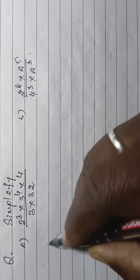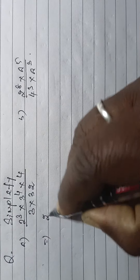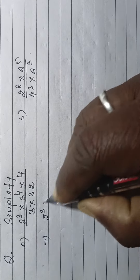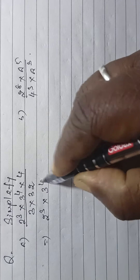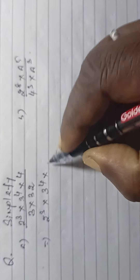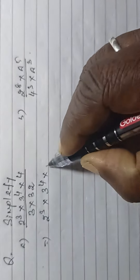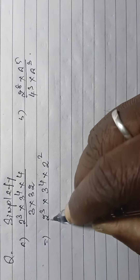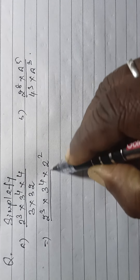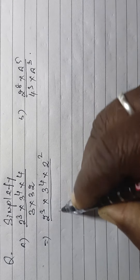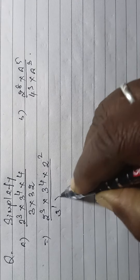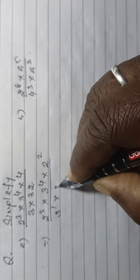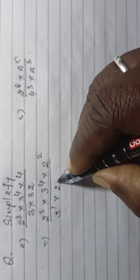Now this is 2 to the power 3, into 3 to the power 4, into 4 — which means 2 to the power 2 — divided by 3 to the power 1, and 32, which is 2 to the power 5.